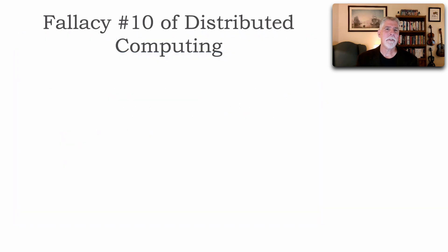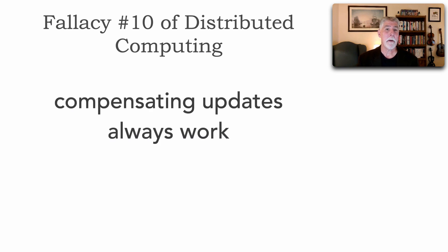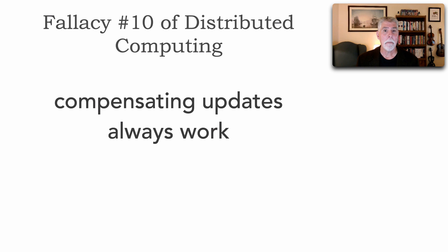What I want to introduce in this lesson is fallacy number 10 of distributed computing, which Neil Ford and I coined: compensation, or compensating updates, always work. A fallacy is something we believe to be true — and how many times do we make the assumption in a distributed transaction, where we're trying to gain a level of atomicity, that when we do transaction reversals those will always magically work? We make that assumption, but they don't always work. There are two reasons why, and let me show you those.